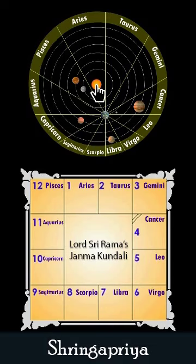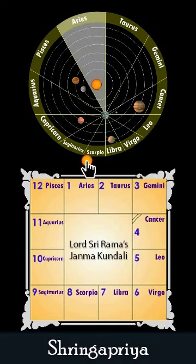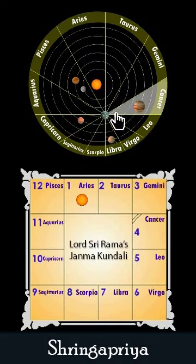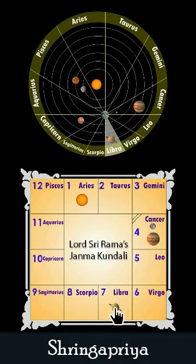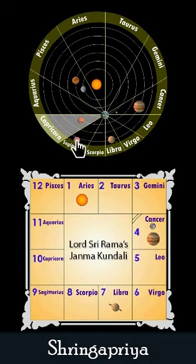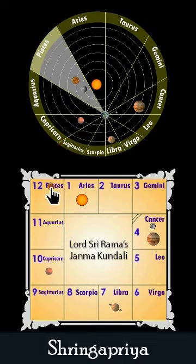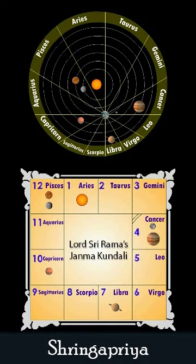Now the Sun is in Aries, Moon and Jupiter in Cancer, Saturn in Libra, Mars in Capricorn, Venus and Mercury in Pisces. Also, Rahu and Ketu are marked, recognizing the lunar points.